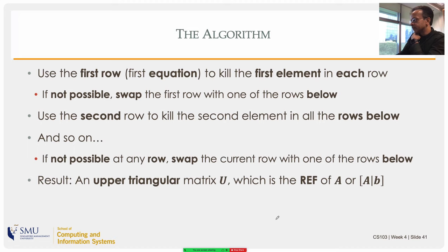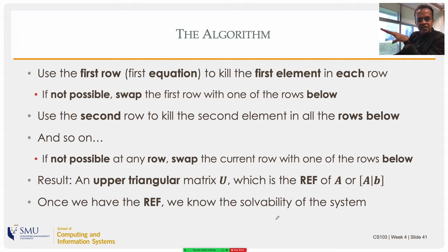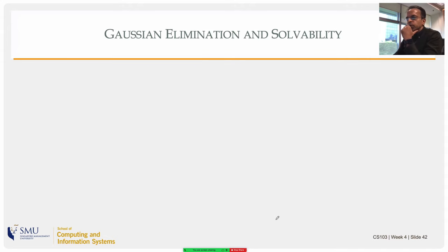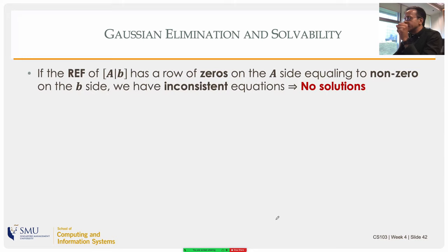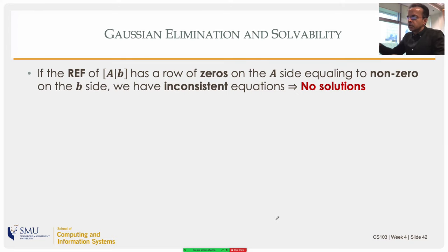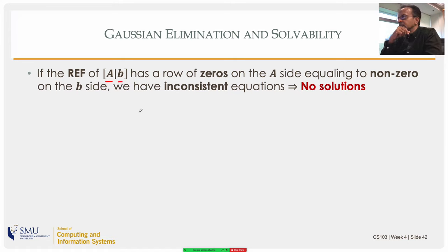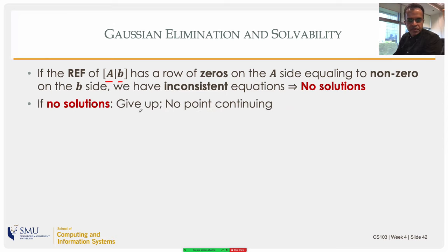Once we have the row echelon form, we can talk about solvability. If the REF of the augmented matrix has a row where all the A-side coefficients are zero but the b-side constant is non-zero — zero equals non-zero — that indicates inconsistency. The moment you detect inconsistency, there are no solutions and you stop.